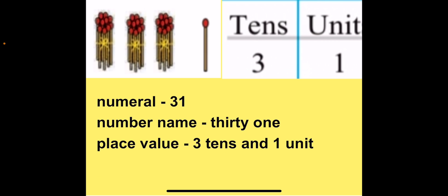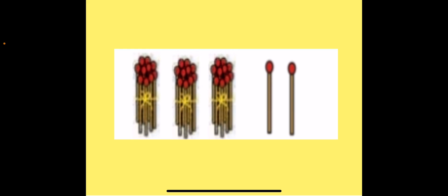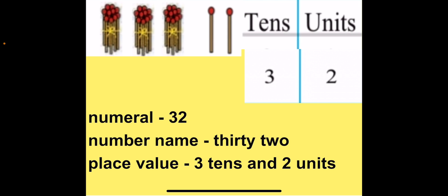The number after 30 is 31. Now when we add 1 more unit we get 3 tenths and 2 units. So our next number is 32. The number name for 32 is THIRTY-TWO. Since we have 3 in tenths place and 2 in units place, the place value for 32 is 3 tenths and 2 units. So the number after 31 is 32.